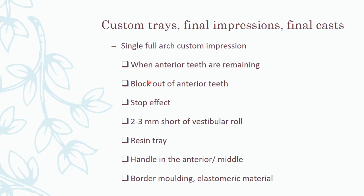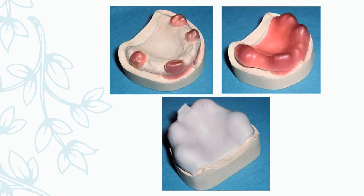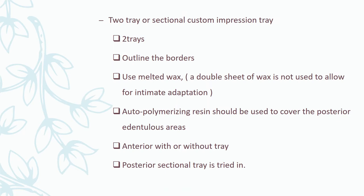This is usually done when the anterior teeth are still remaining. All the anterior teeth must be blocked out. The tray can have stops placed, can be two to three mm short of the vestibular depth, is created from a resin tray, must have a handle, must be border-molded, and an elastomeric impression is taken. The blocked-out spacer with stops and a special tray with handle are shown.